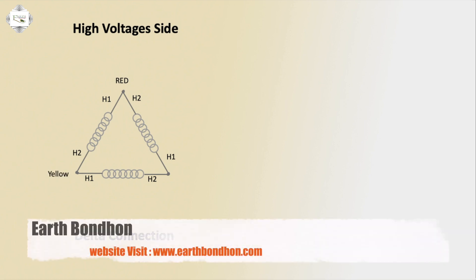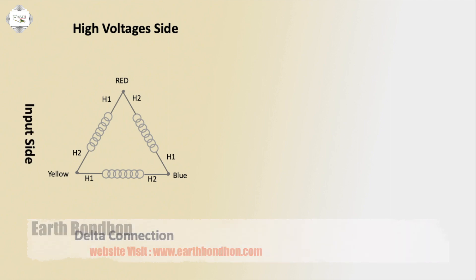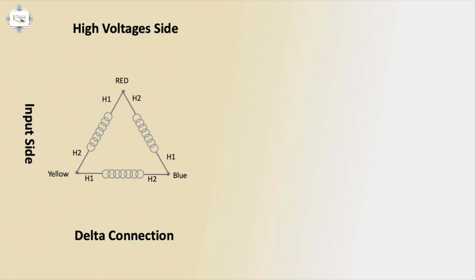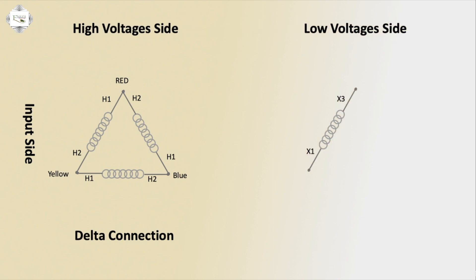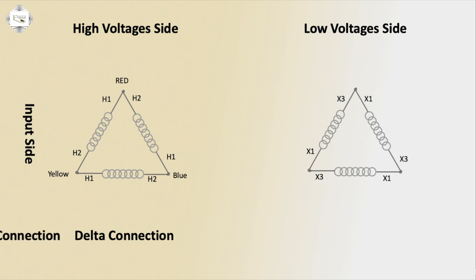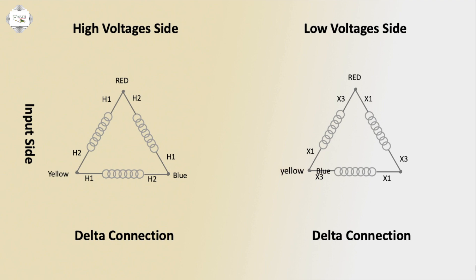Yellow or blue input side voltage 11kV. Low voltage side — three terminals X1 and X3. Delta connection on the outgoing side, yellow or blue.